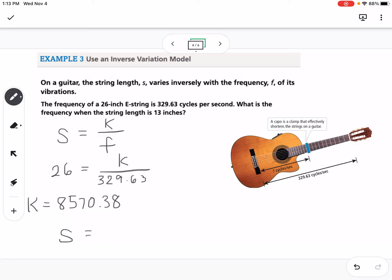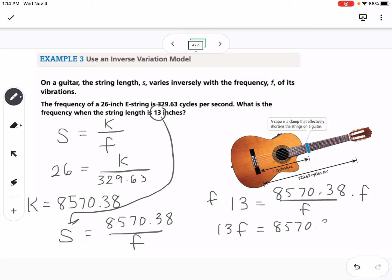Now we can write s equals 8570.38 over f, and then it asks us to find the frequency when the string length is 13. So we're going to plug 13 in for s. We would have 13 equals 8570.38 over f. If you're solving for f and f is in the denominator, remember the first step is to multiply both sides by f, so then I'd end up with 13f equals 8570.38, and then we divide by 13.